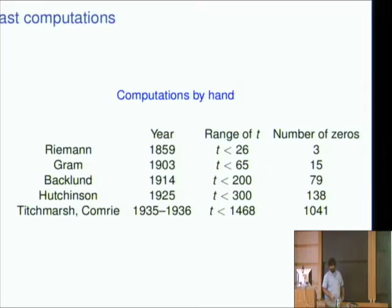So this range of t here, I'll really be focusing on computing the zeta function on the critical line. The real part is always one-half, and t is the imaginary part. So by 1936, we knew that all of the zeros of the zeta function with an imaginary part less than 1468 were located on the critical line, and there were 1,041 zeros there.